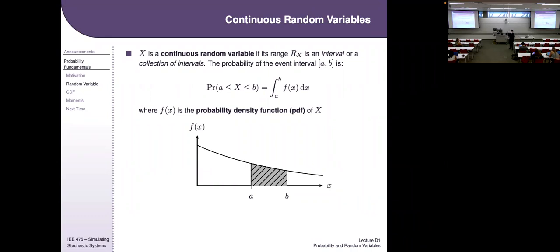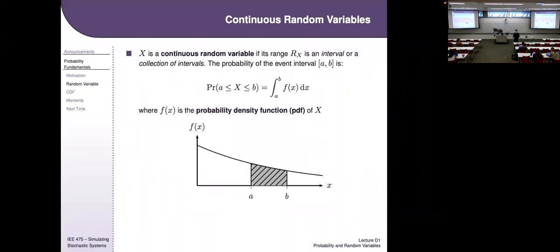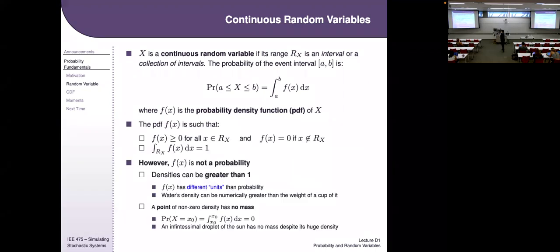The density could be greater than the total mass — for example, a table might weigh 30 pounds, but its density at a point could be 100 pounds per linear inch. Probability density is not probability. The PDF is always greater than zero; density is zero outside the range. The integral of the density over the range equals one. Densities themselves can be greater than one — density is a totally different unit than probability.